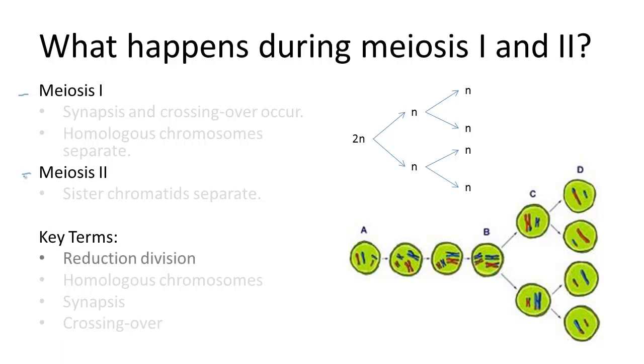Meiosis I is also called reduction division. Before it occurs, a cell will undergo the same process of DNA replication as in mitosis. So when the cells begin the meiotic cell division process, there are two sister chromatids per chromosome.